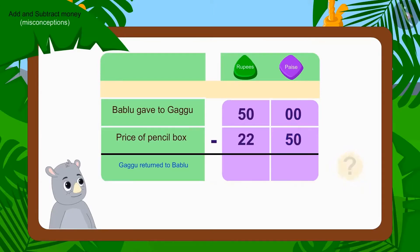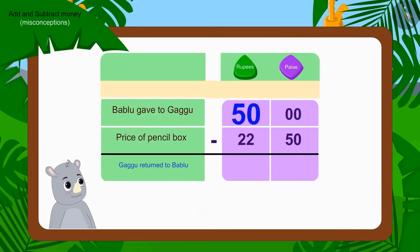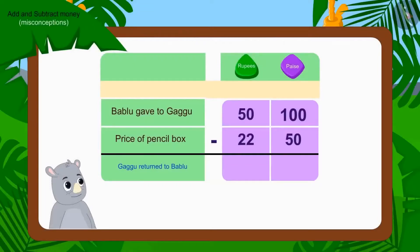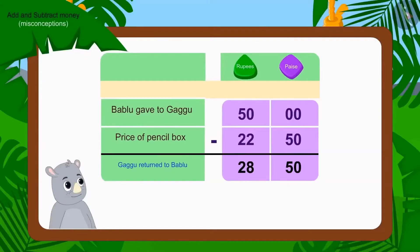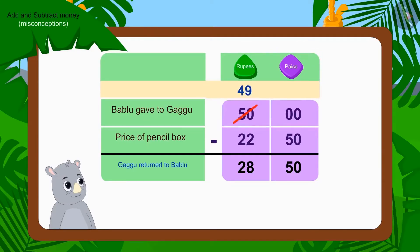So what shall we do? We will use the borrowing process. We will borrow 1 rupee out of 50 rupees and write it as 100 paise. Since we borrowed 1 rupee, we cut 50 rupees and write 49 rupees. Out of 100 paise, how much is left after deducting 50 paise? Looking at Gaggu's subtraction, we find that Gaggu also used the borrowing process — but he forgot to cut 50 rupees and write 49 rupees.